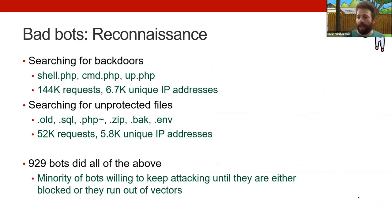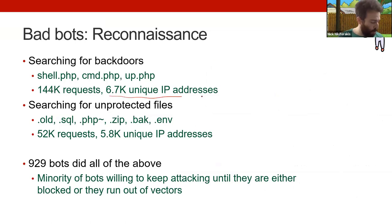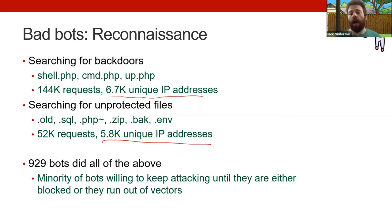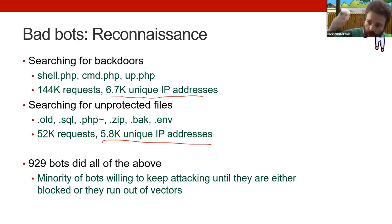We saw reconnaissance not related to exploits — searching for misconfigurations, backdoors, and protected files developers left exposed. A significant number of IP addresses were explicitly searching for these files, trying to capitalize on developer error. We had 992 bots that were doing everything: full-fledged attack suites that started from reconnaissance and worked through all the attack types they were searching for.